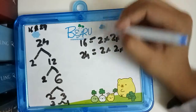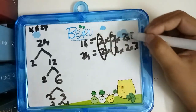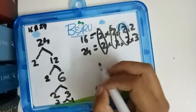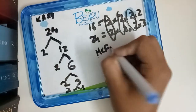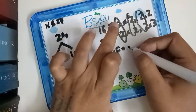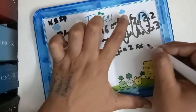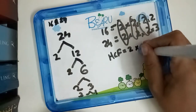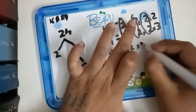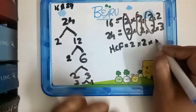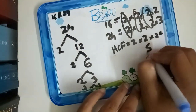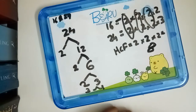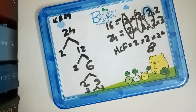Now let's find the matching numbers between the factors of 16 and 24. The matching factors are 2, 2, and 2. So the HCF is equal to 2 multiplied by 2 multiplied by 2, which is 8. So 8 is the HCF of 16 and 24. That is how you find the HCF of a number — see you guys later, bye!